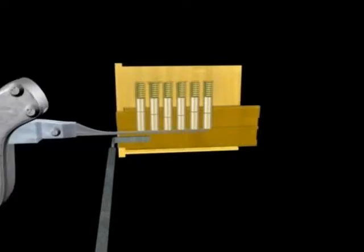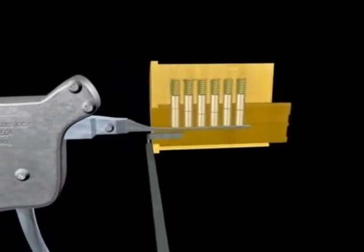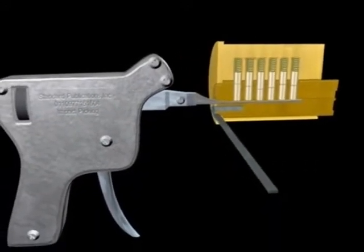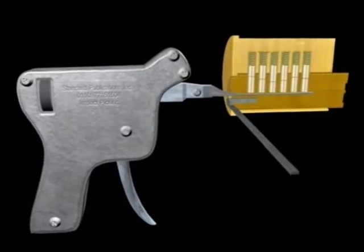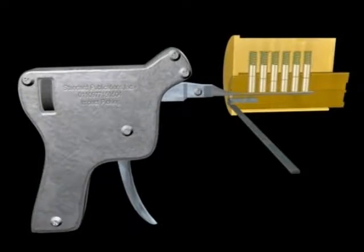Place the pick gun all the way into the keyway. Insert the torque wrench, applying a rotating pressure on the wrench, and squeeze the trigger. Do not move the gun vertically or laterally while picking. As the pick strikes the pins and knocks them upward, use your torque wrench to cause the plug to catch the top pins as they jump into the hole casing.